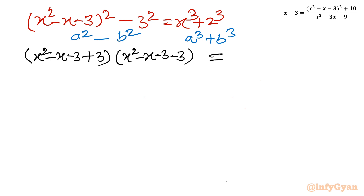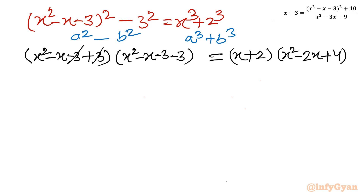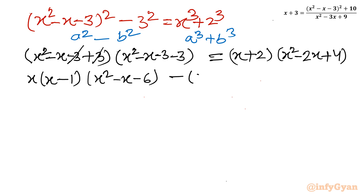The +3 and -3 cancel on the left side, simplifying to x(x - 1). The second bracket becomes x² - x - 6. Taking all terms to the LHS gives: x(x - 1)(x² - x - 6) - (x + 2)(x² - 2x + 4) = 0.